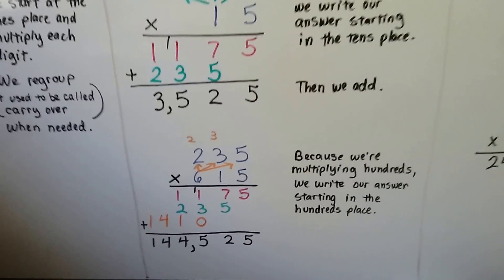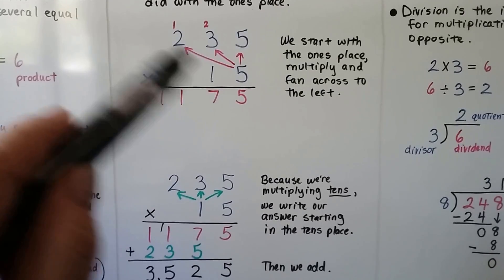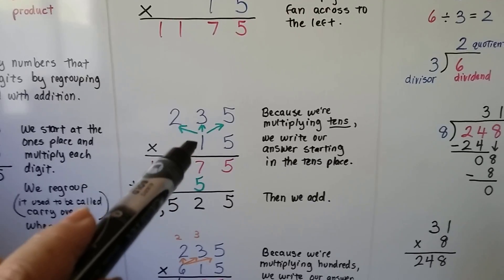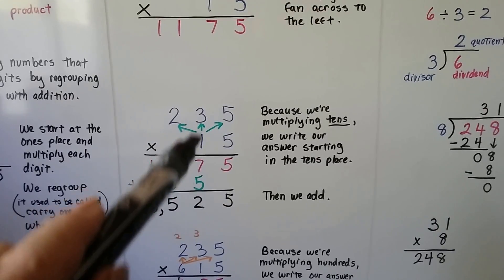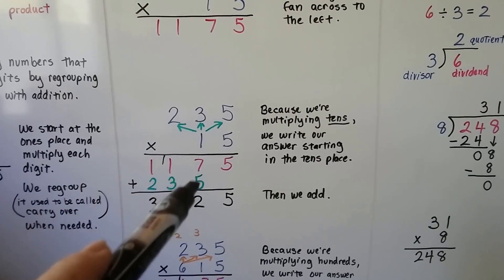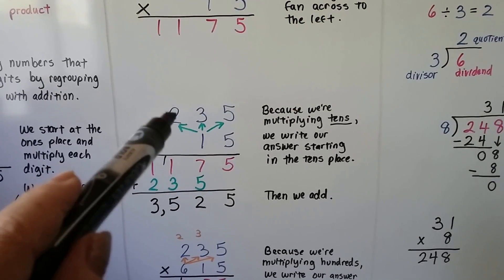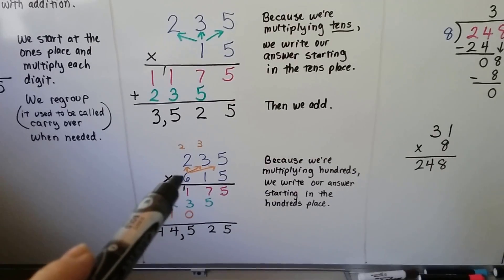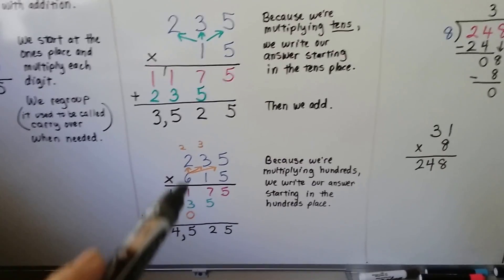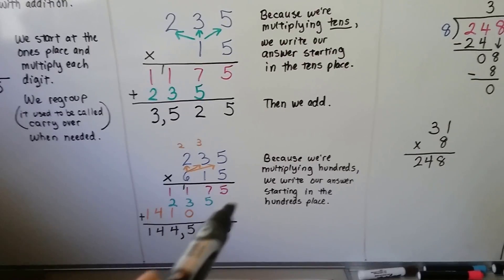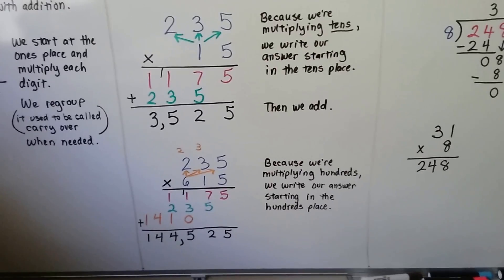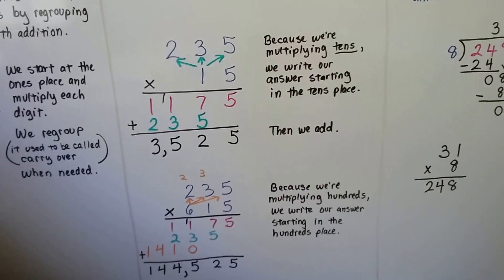Remember when you're multiplying: start with the ones place and fan to each digit — ones, tens, hundreds. Then move to the tens place and that's where the answer starts being written. Then for the hundreds place, that's where the answer starts because you're multiplying hundreds, so two spaces are left blank. You do ones, tens, hundreds for each digit in order.